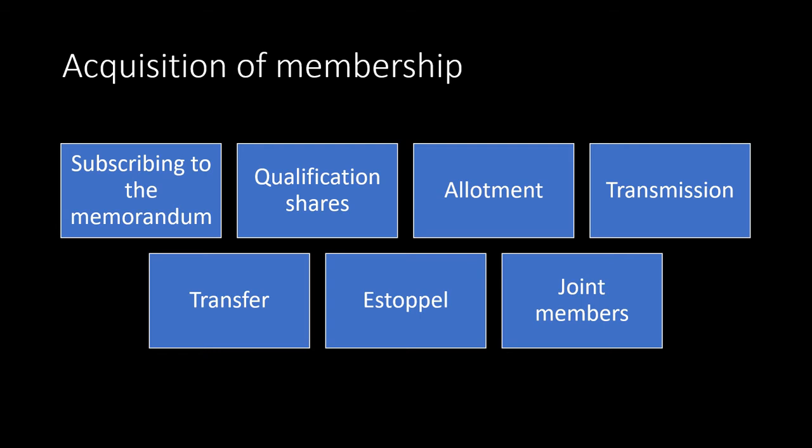Qualification shares are shares whose purchase qualifies you to become a director. The Companies Act does not specify qualifications to become a director, but through provisions in the articles of association, companies may set qualifications including buying qualification shares. A person who buys qualification shares becomes a shareholder and therefore also a member. Another method is allotment: when a company issues shares, a person who applies may get shares allotted, and once allotted, he becomes a member.